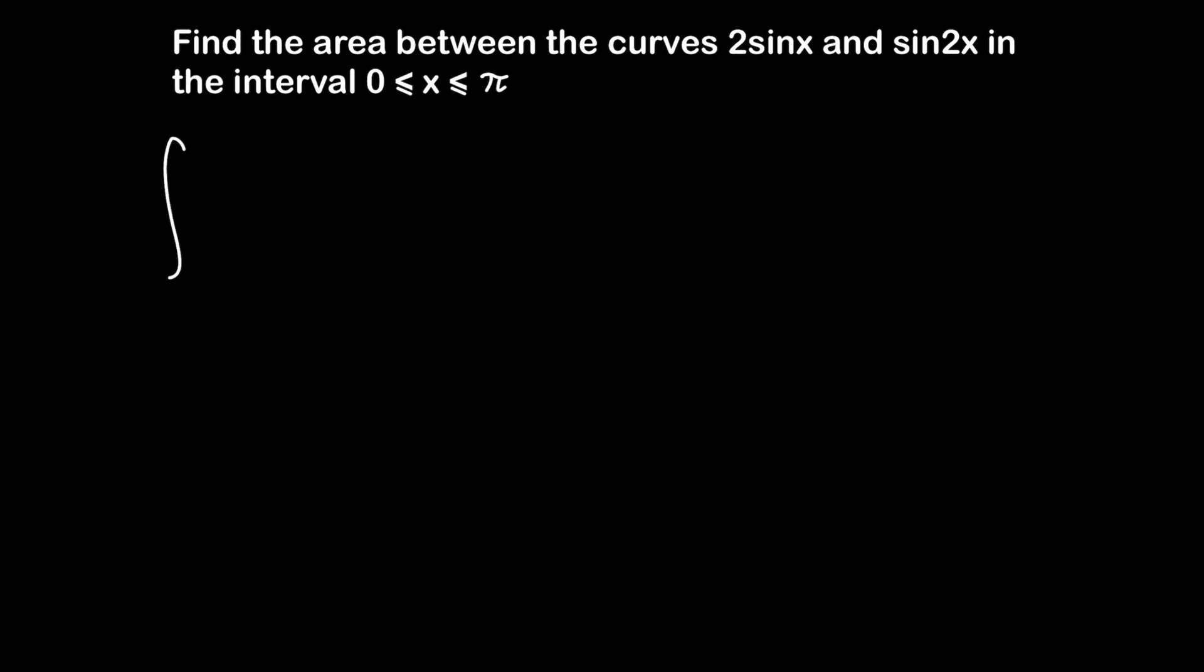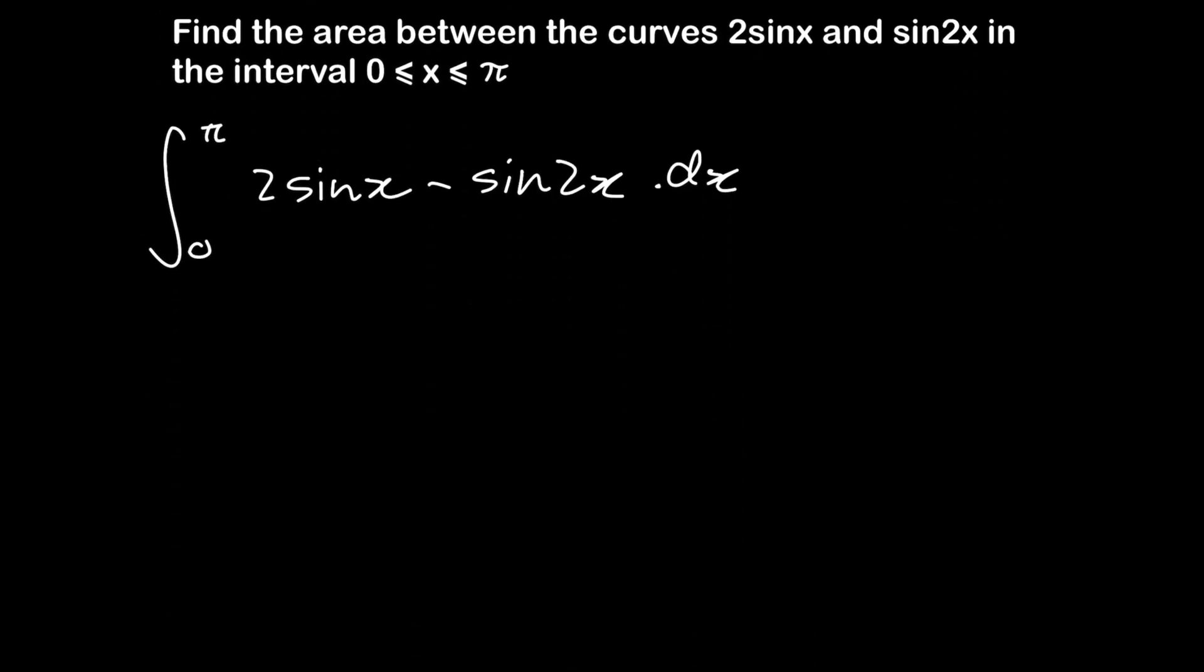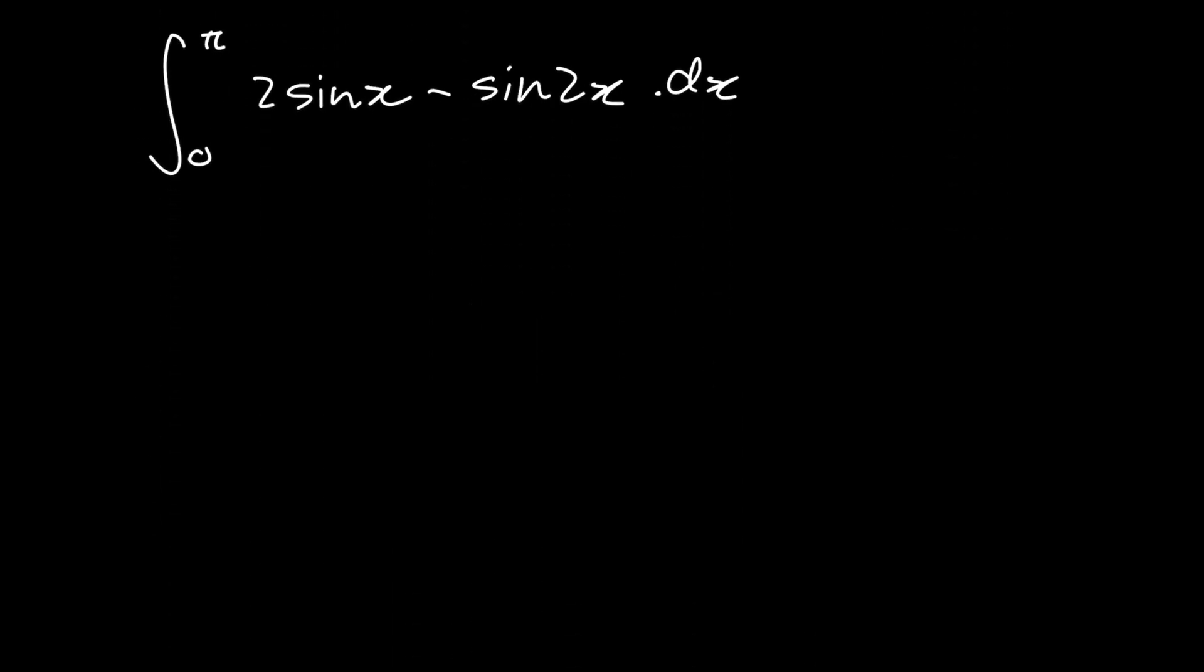We have the integral from 0 to π of 2sin(x) - sin(2x) dx. As you can see, 2sin(x) was higher than sin(2x), which created this area. We can split this into two integrals: the integral from 0 to π of 2sin(x) minus the integral from 0 to π of sin(2x).